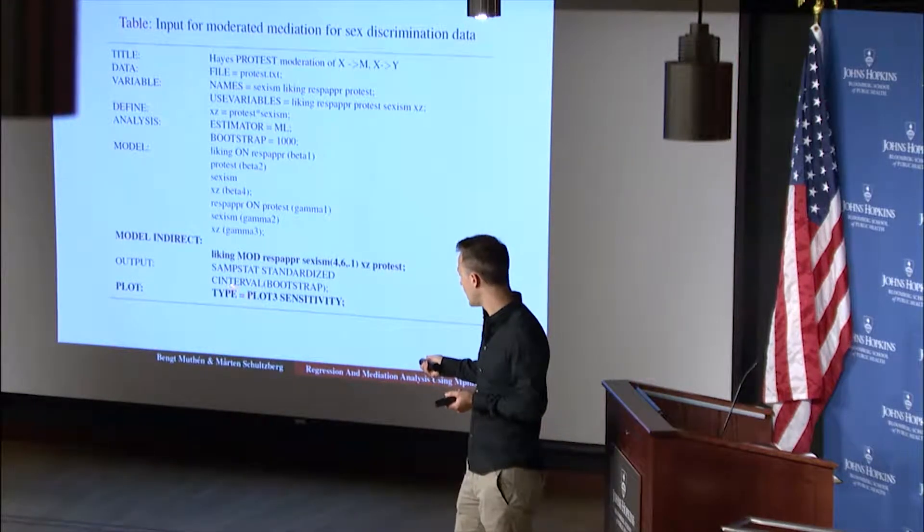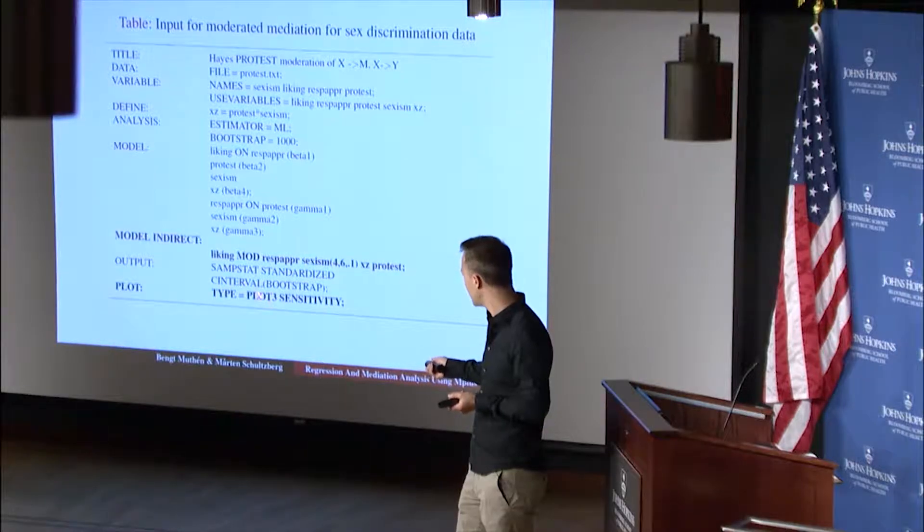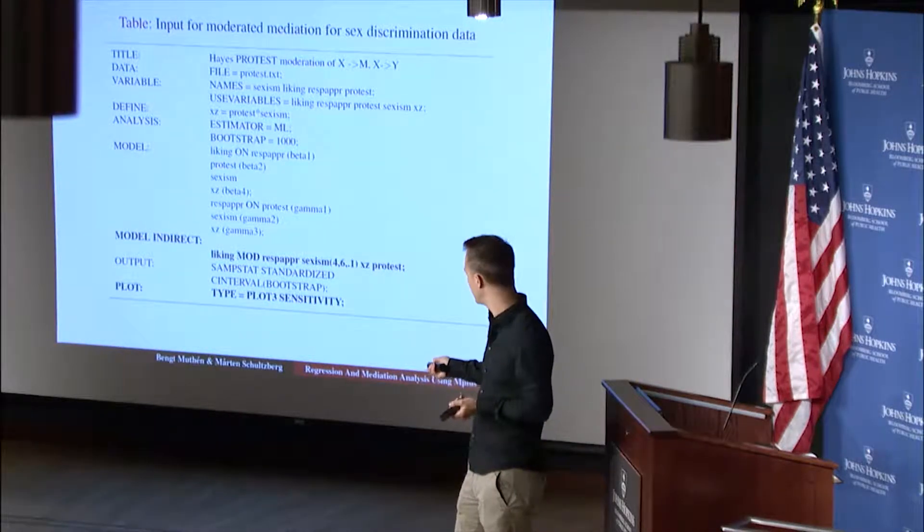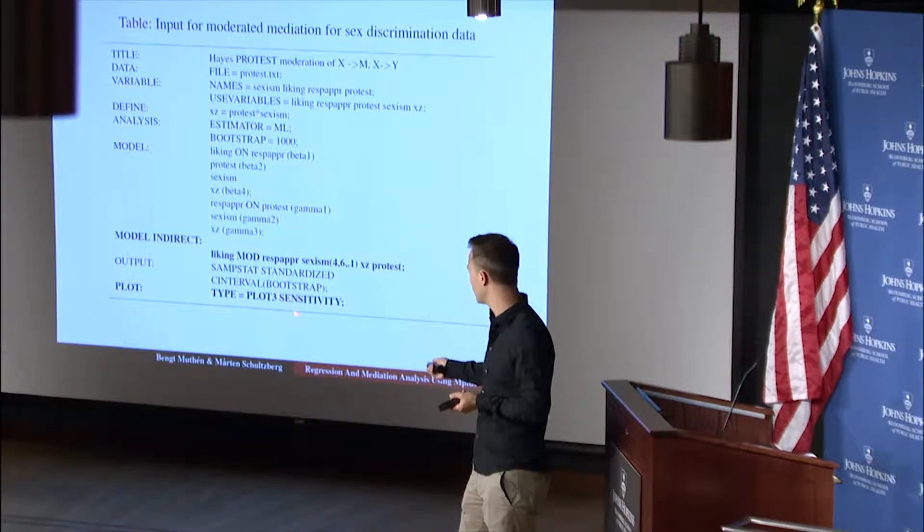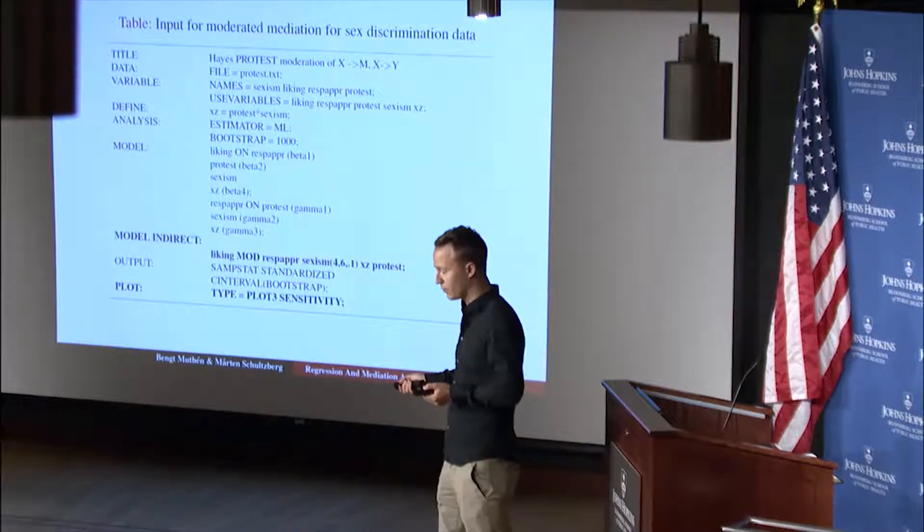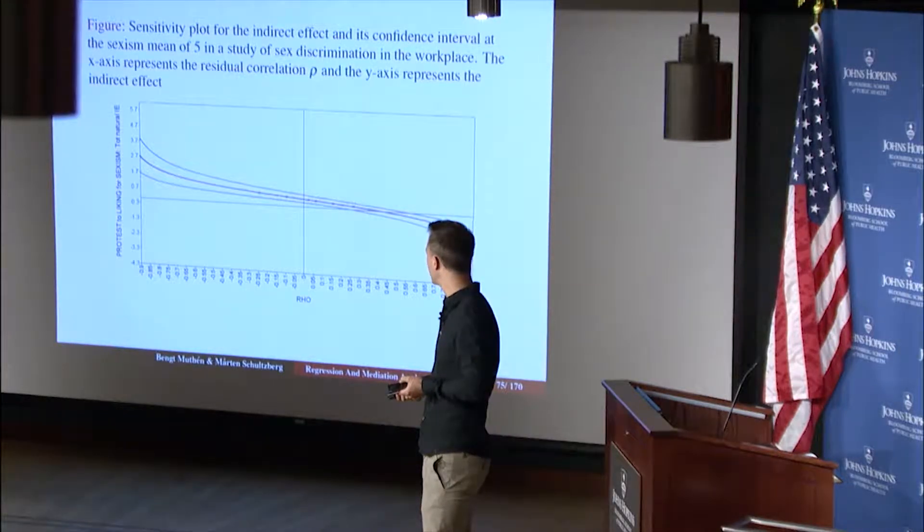And then we ask for plot type, plot type equals plot three. And we saw that one of these plots, but then we also now ask for the sensitivity plot, which is the new thing here. So the sensitivity plot will give us a plot looking like the one Bengt talked about. And we'll look at this plot now.